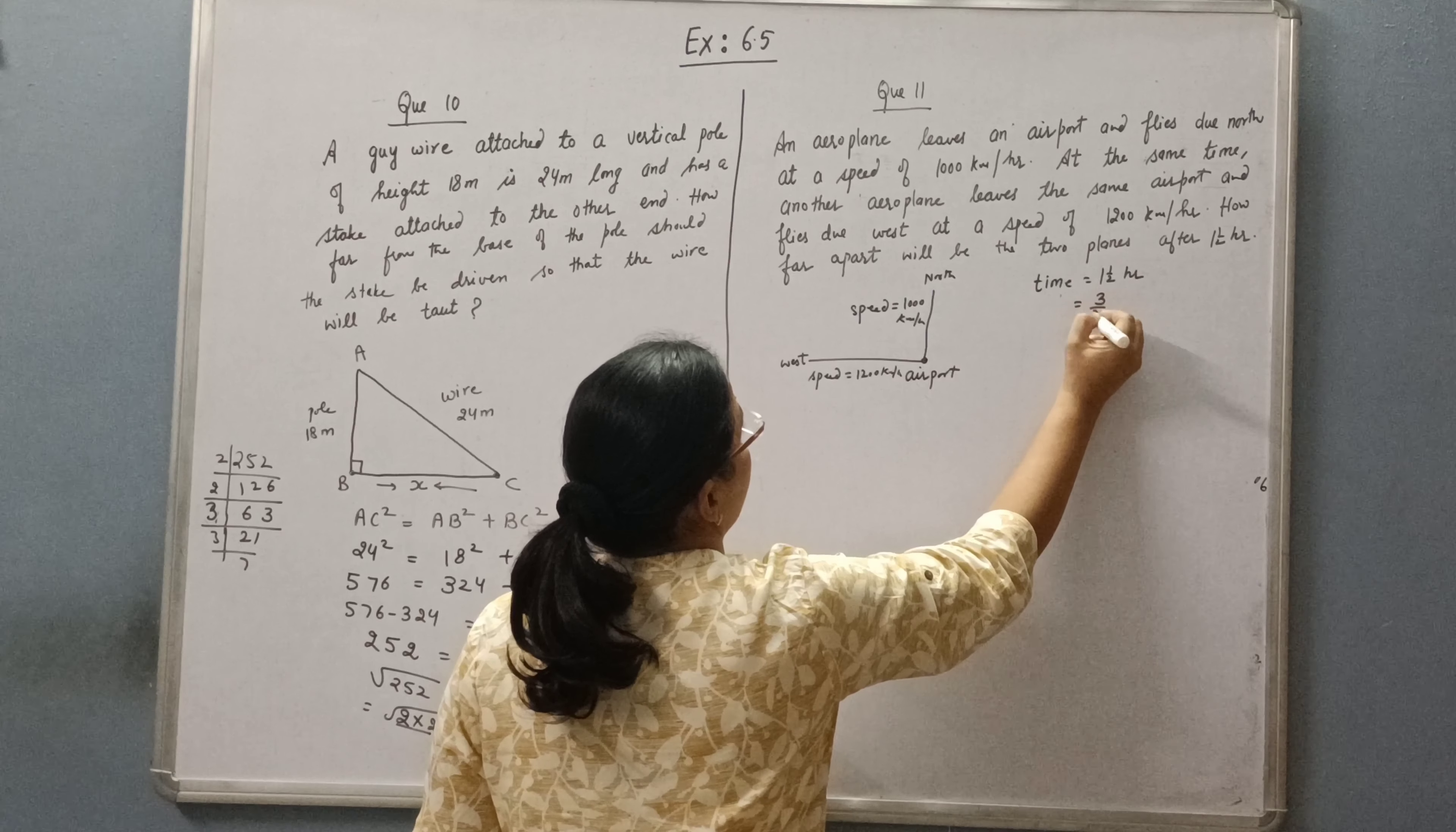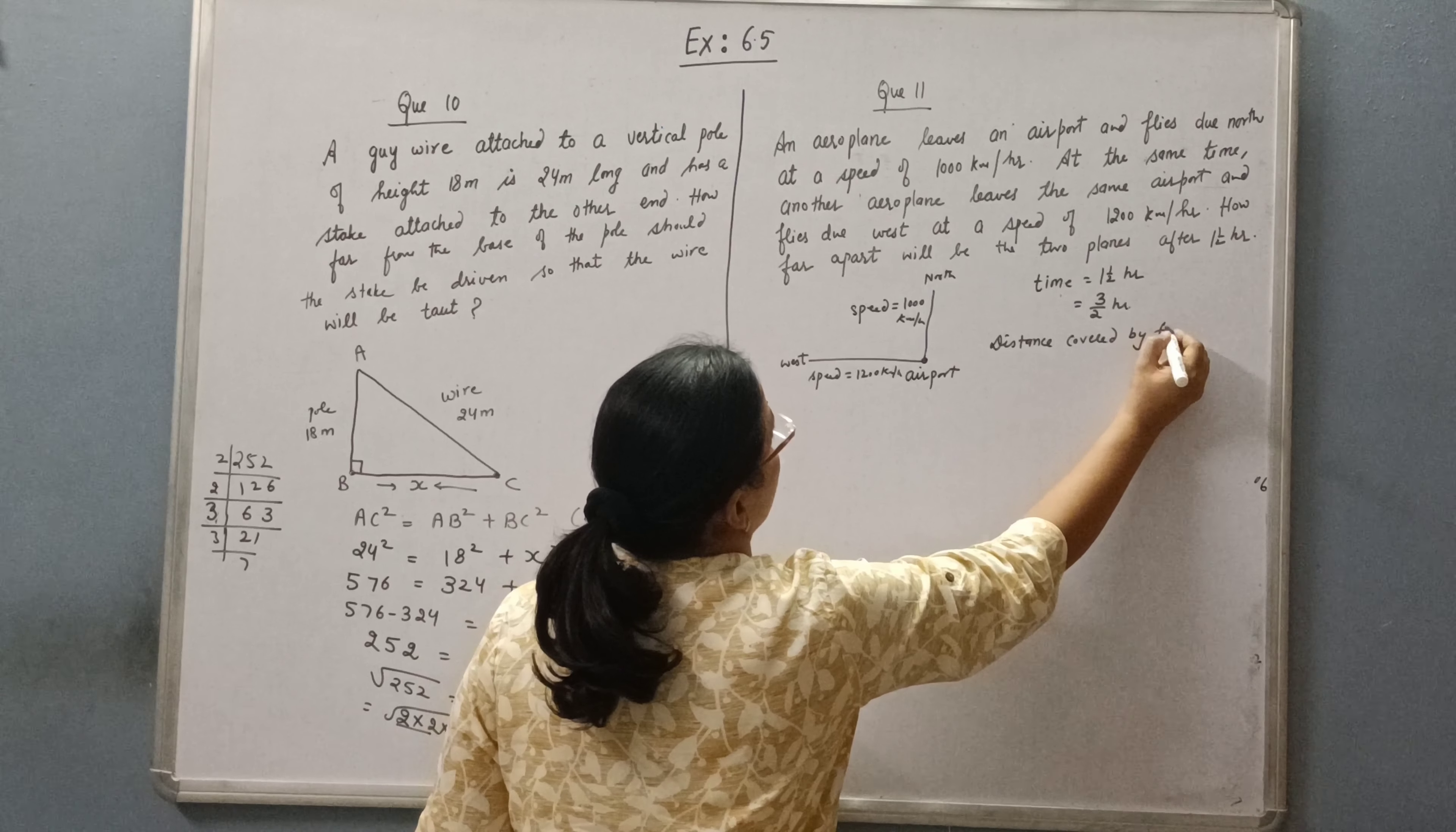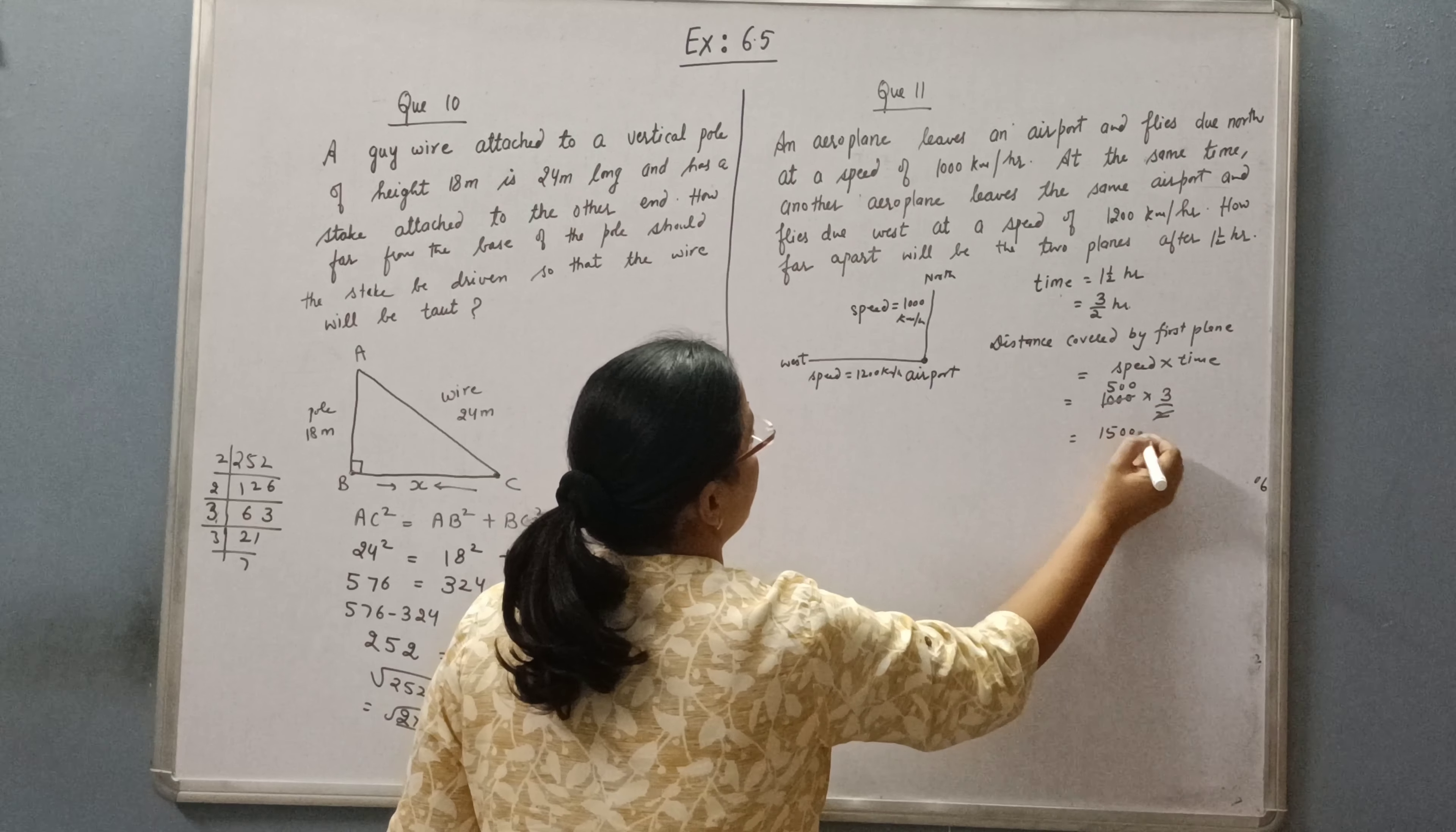So first of all we will find the distance covered by plane number one. We know the formula of distance is speed into time. So speed is 1000 and time is three by two, so this is 1500 km.